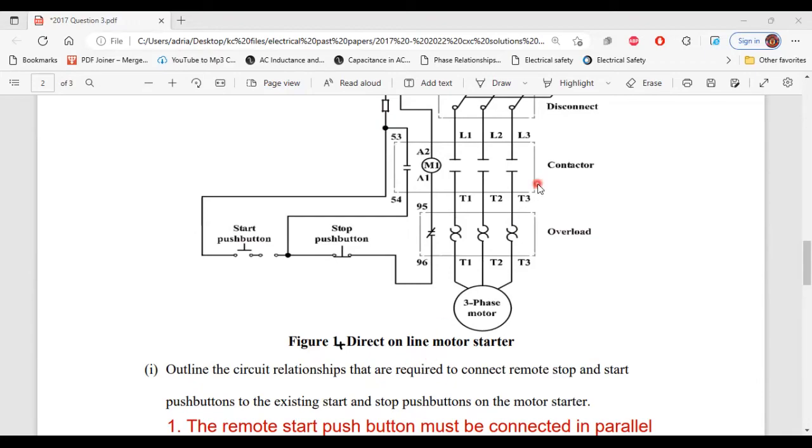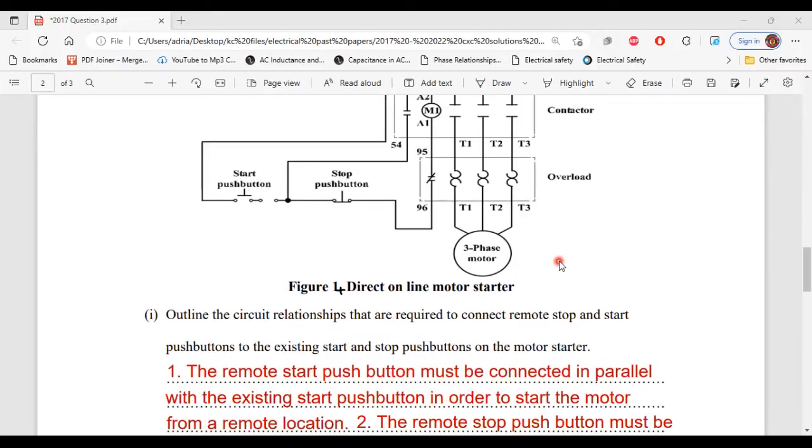When it mentions remote stop and start push buttons, it's talking about being able to control the circuit from a different location. The existing start and stop push buttons would be at the original location, and the remote start and stop push buttons are from another location. What they want to know is how you would go about making the connections. This is how you do it.